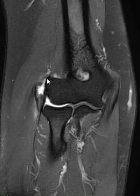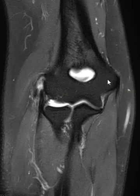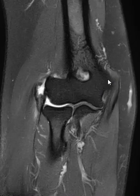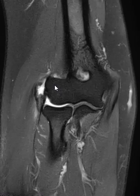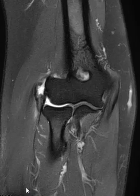We see the lateral epicondyle over here — this is the epicondyle, here's the medial epicondyle, and the radial head here. We see this fluid signal overlying the epicondyle, and the common extensor muscle group is down here in the forearm. The extensor muscles come together to form this common extensor muscle group.